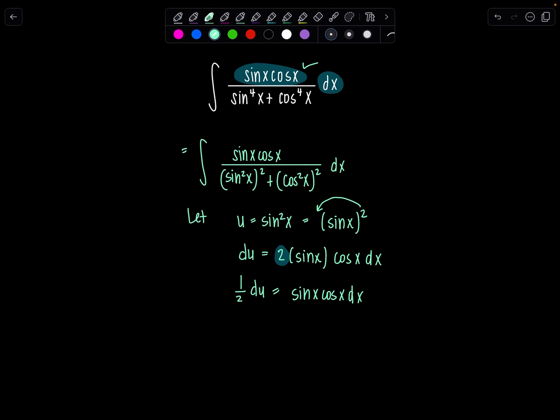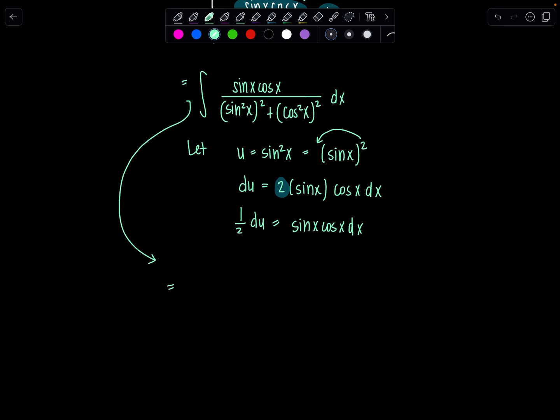So that whole term is accounted for. And then now I know, down here, this is going to be u squared. Well, what about this cosine squared? This is where we're going to use the Pythagorean identity and rewrite cosine squared as 1 minus sine squared. So we're almost ready to make our substitution. This is sine x cosine x over, I'm going to write this as sine squared x squared plus 1 minus sine squared x squared dx.